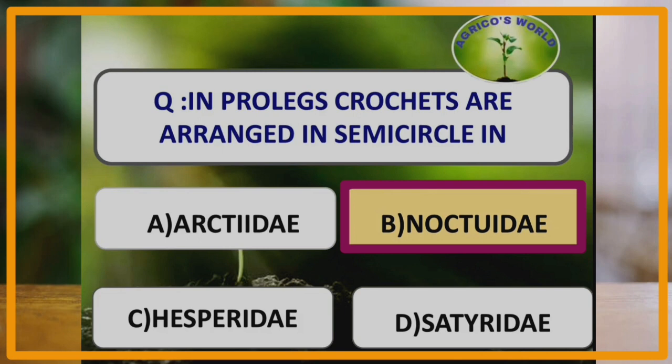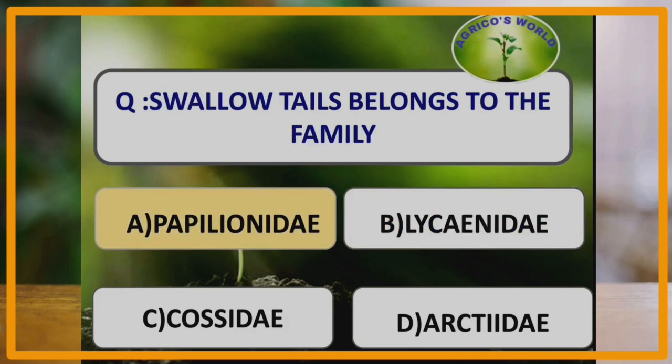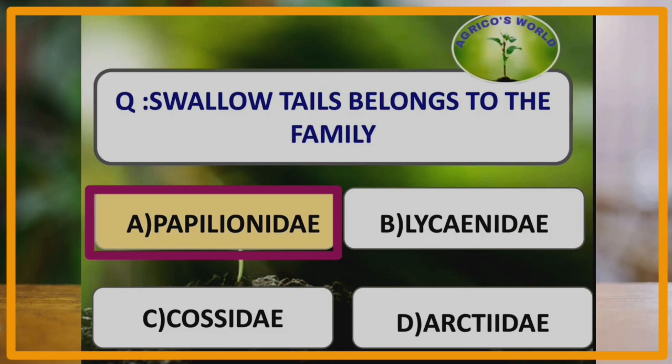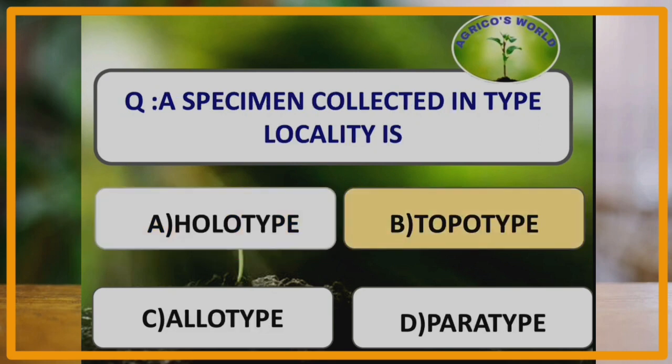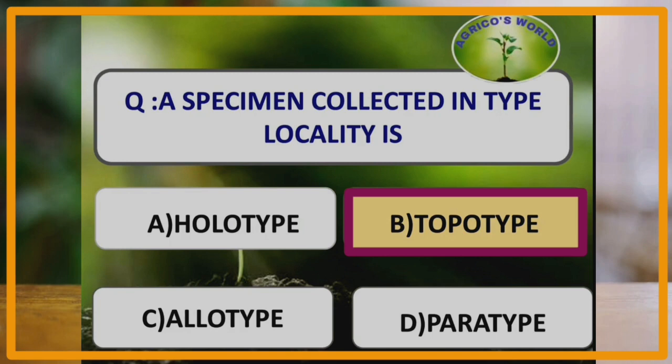Swallowtails belong to the family Papilionidae. Young larvae of this family resemble bird's excreta, and the prothoracic legs have tibial epiphysis. The retractile osmateria is present on the thoracic terga of the caterpillar. A specimen collected in the locality is called a topotype, and the locality at which holo- and leptotypes are collected is called the type locality.